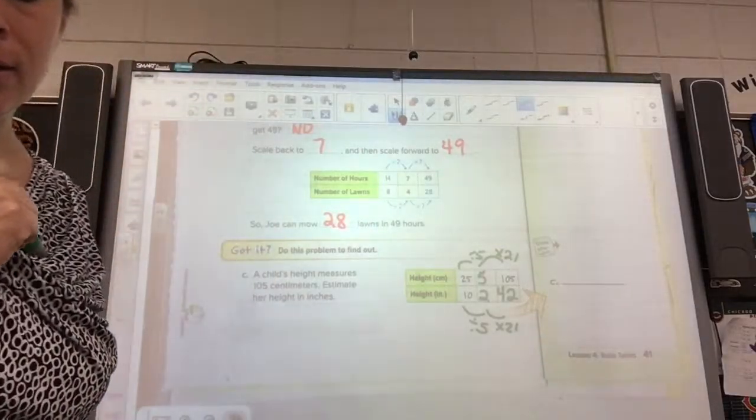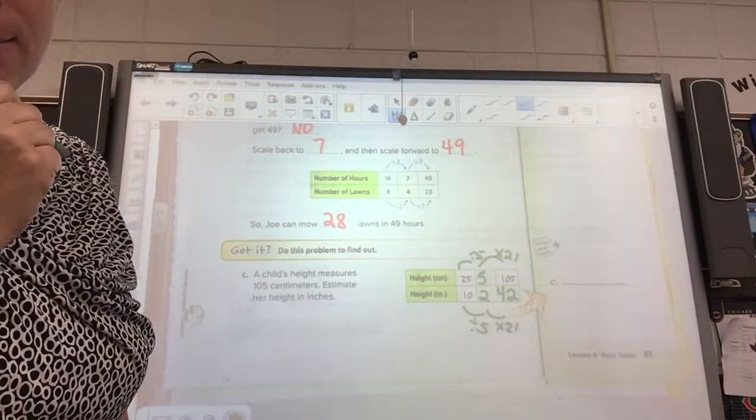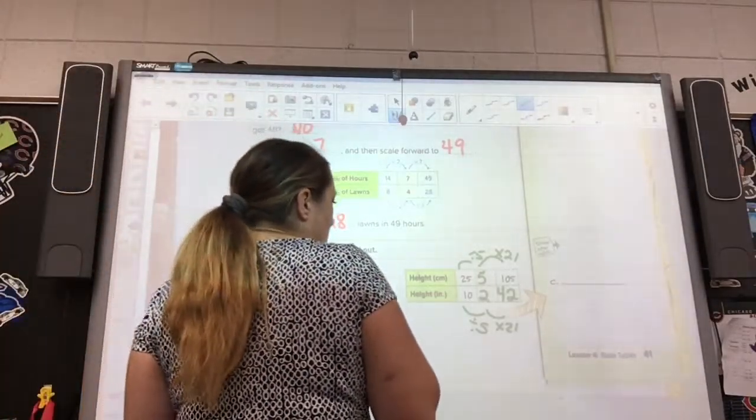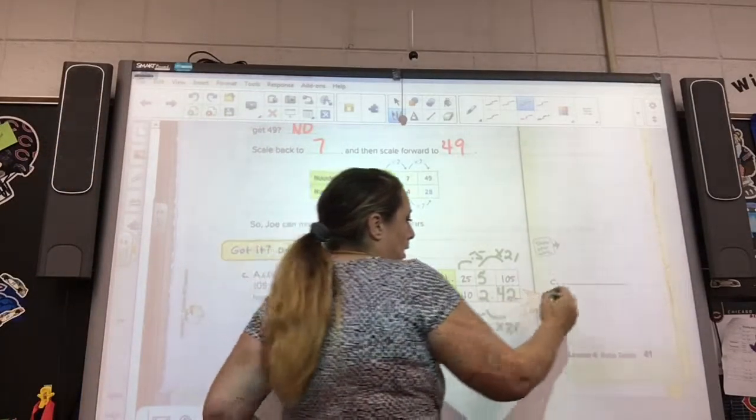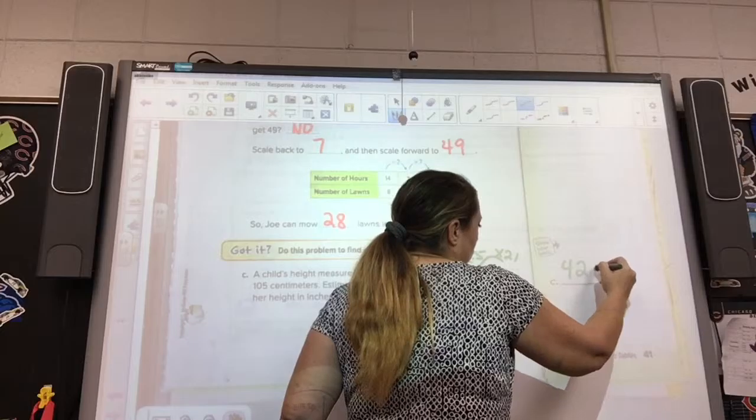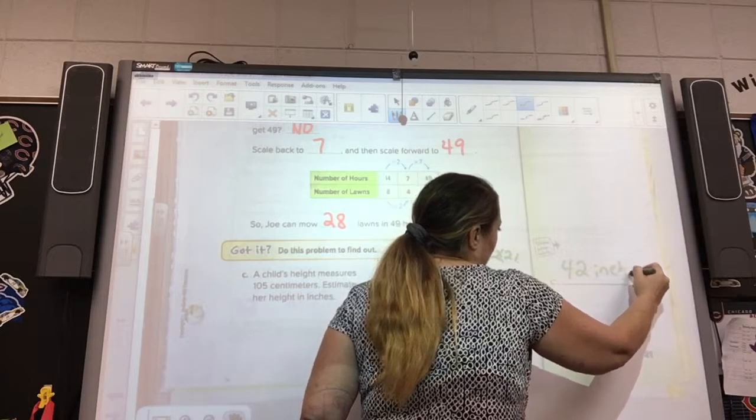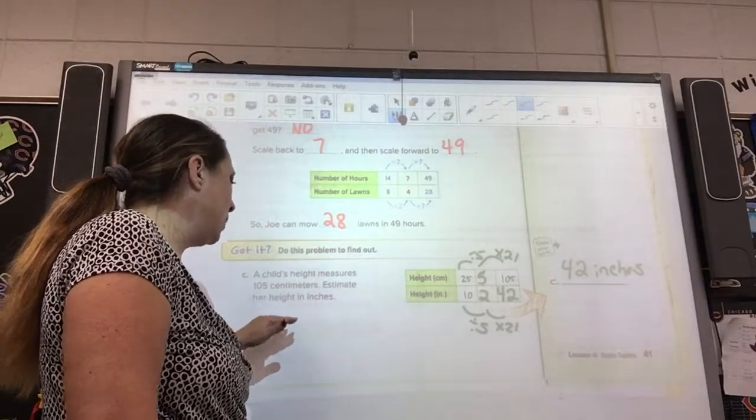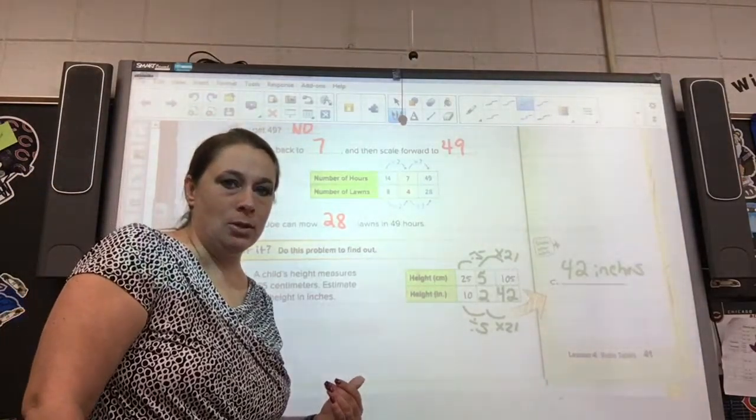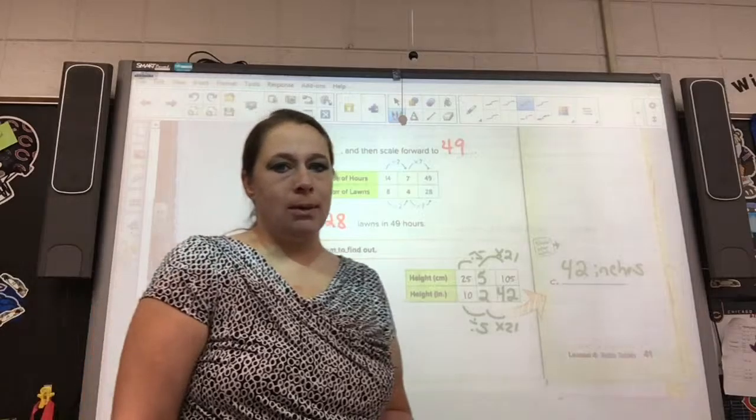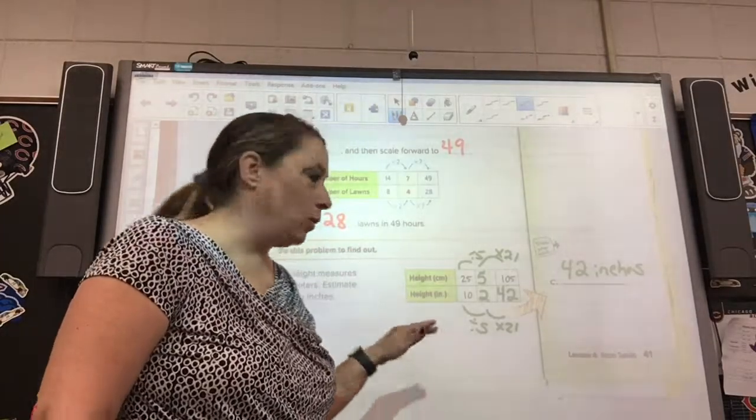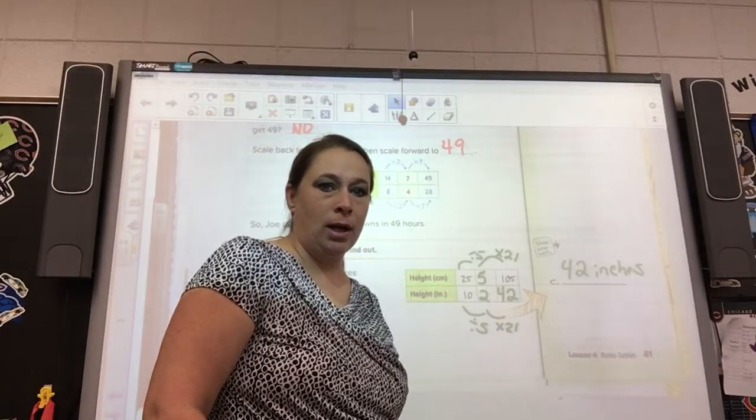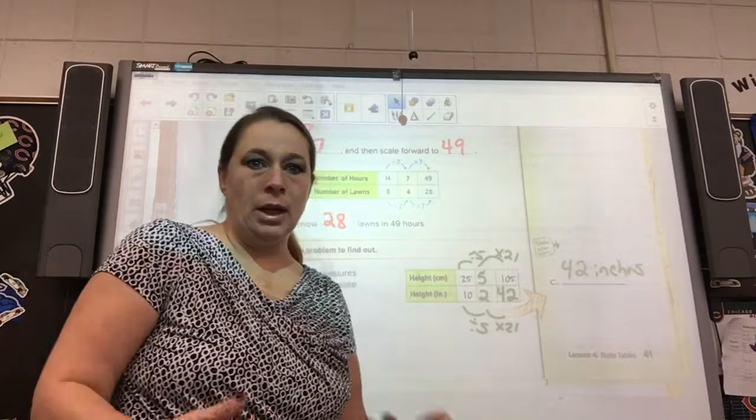So a child's height measures 105 centimeters. What is her height in inches? It is 42 inches. Don't forget that label. All right. So, comparing centimeters to inches, this is a great way to do that. Sometimes those conversions can be really hard. But sometimes if you have a chart like this, a scaling back and scaling forward idea, it helps you to figure out those answers.